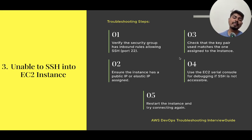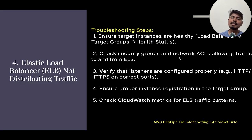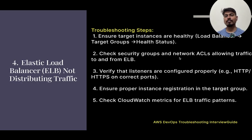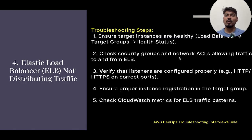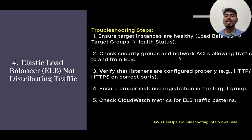The next question is: elastic load balancer not distributing traffic to EC2 instances — how do we troubleshoot? Ensure target instances are healthy, because the load balancer will only distribute traffic to healthy targets. Go to the load balancer, check the target groups and their status. Also check security groups and network ACLs to verify they are allowing traffic to and from the ALB.